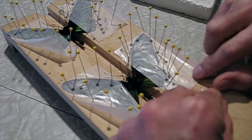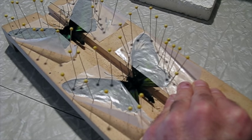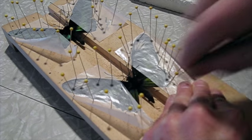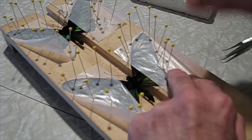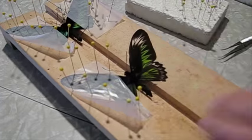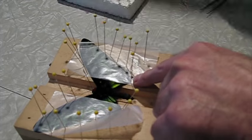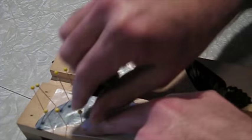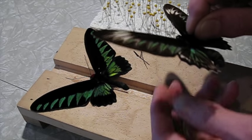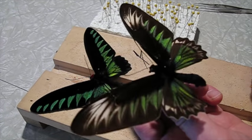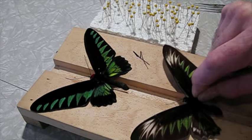These specimens have been sitting for a couple days and they're dry now. We're going to pull the pins and see how they look. Okay, so this is the female, a lot less green on it, white patches on the wings. And the male.